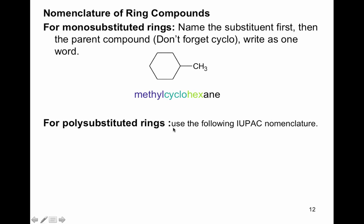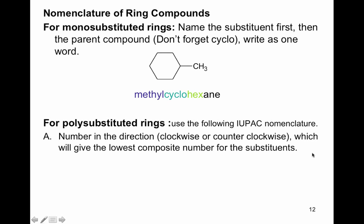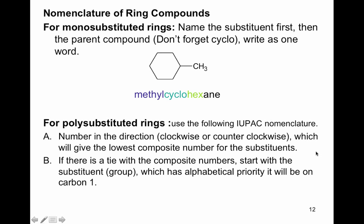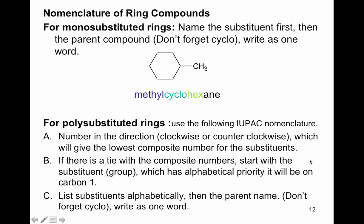For polysubstituted rings, use IUPAC nomenclature: number the ring in the direction — clockwise or counterclockwise — that gives the lowest composite number for all substituents. If there's a tie, start with the substituent that's alphabetically first on carbon one, then go in the direction that gives the next substituent the lowest number. List substituents alphabetically, then the parent name, written as one word.